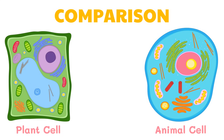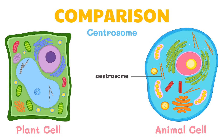Lastly, we have the centrosome. The centrosome is a microtubule-organizing center found near the nuclei of animal cells. It contains a pair of centrioles — two structures that lie perpendicular to each other. The centrosome replicates itself before a cell divides, and the centrioles appear to have some role in pulling duplicated chromosomes to opposite ends of the dividing cell. However, the exact function of centrioles in cell division isn't entirely clear, as cells that have had the centrosome removed can still divide, and plant cells, which lack centrosomes, are also capable of cell division.